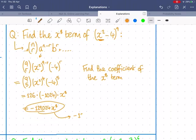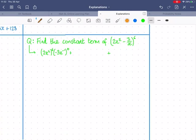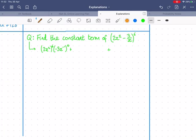Coefficient just means the number that you're multiplying your power of x by. So if it asks for coefficient, the answer would just be this number minus 129,024. If it asks for the term, it needs the whole term with your powers of x as well.